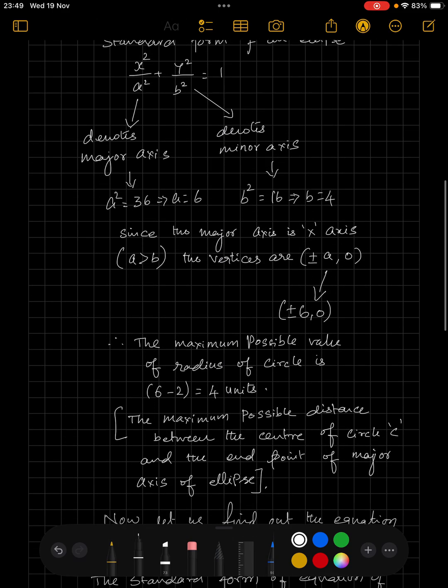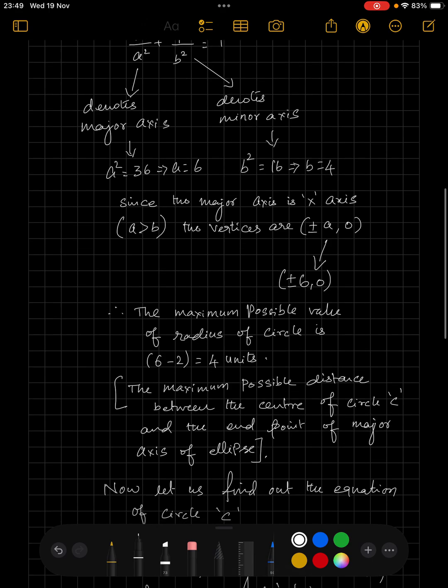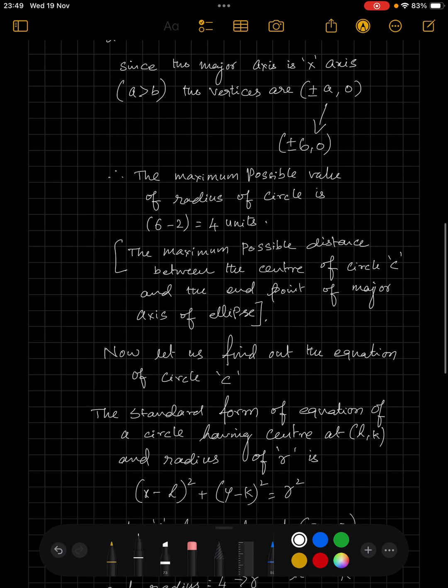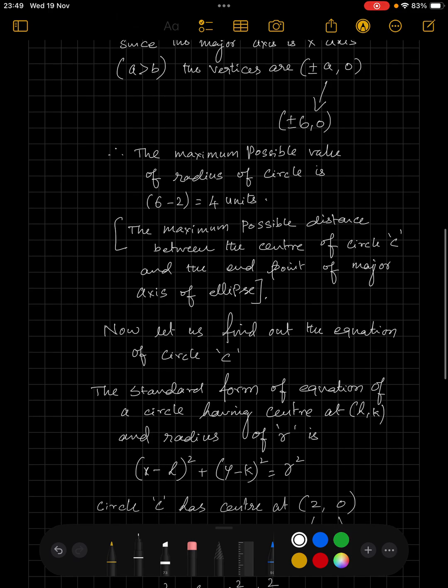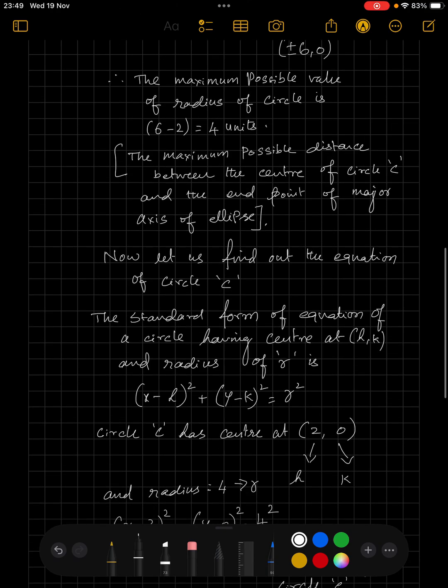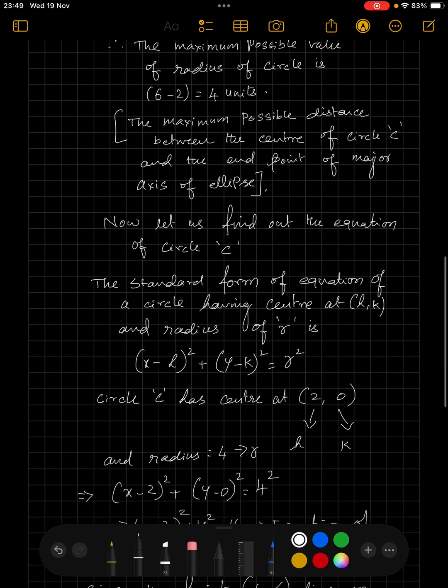Having found the radius of the circle as 4 units, now we have to find the equation of circle C. The standard form of equation of a circle having center at h comma k and radius r is x minus h whole square plus y minus k whole square is equal to r square.